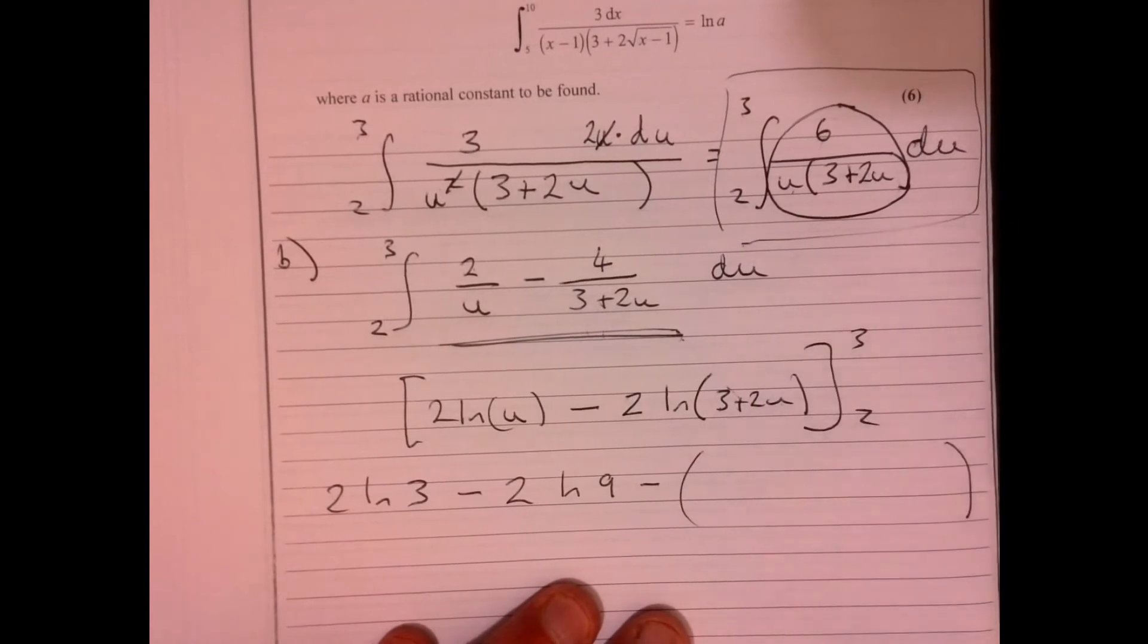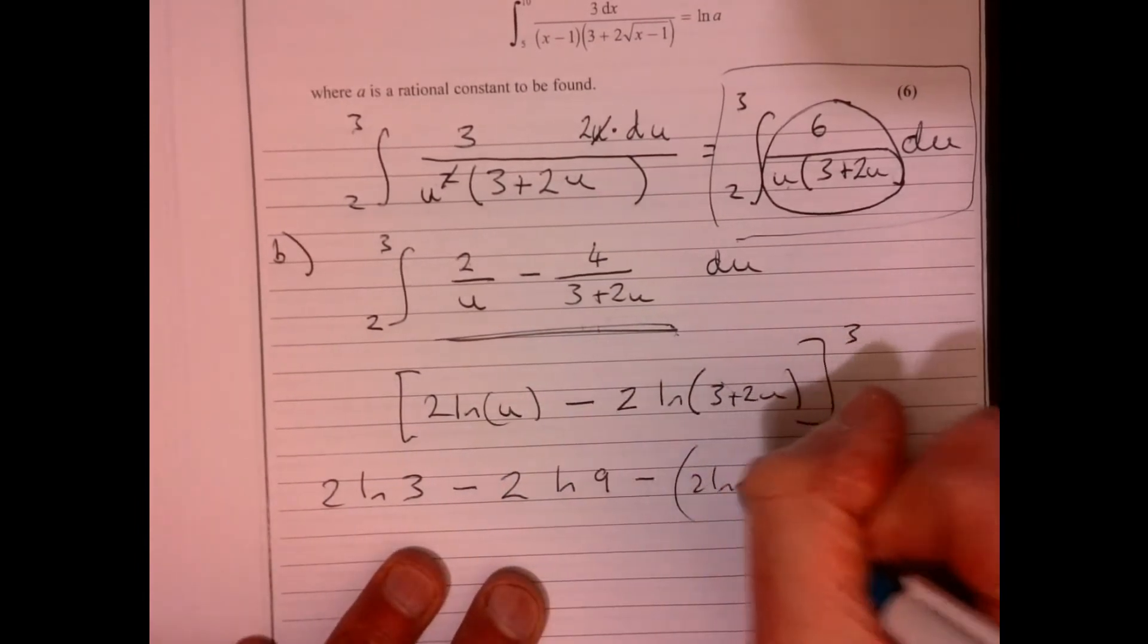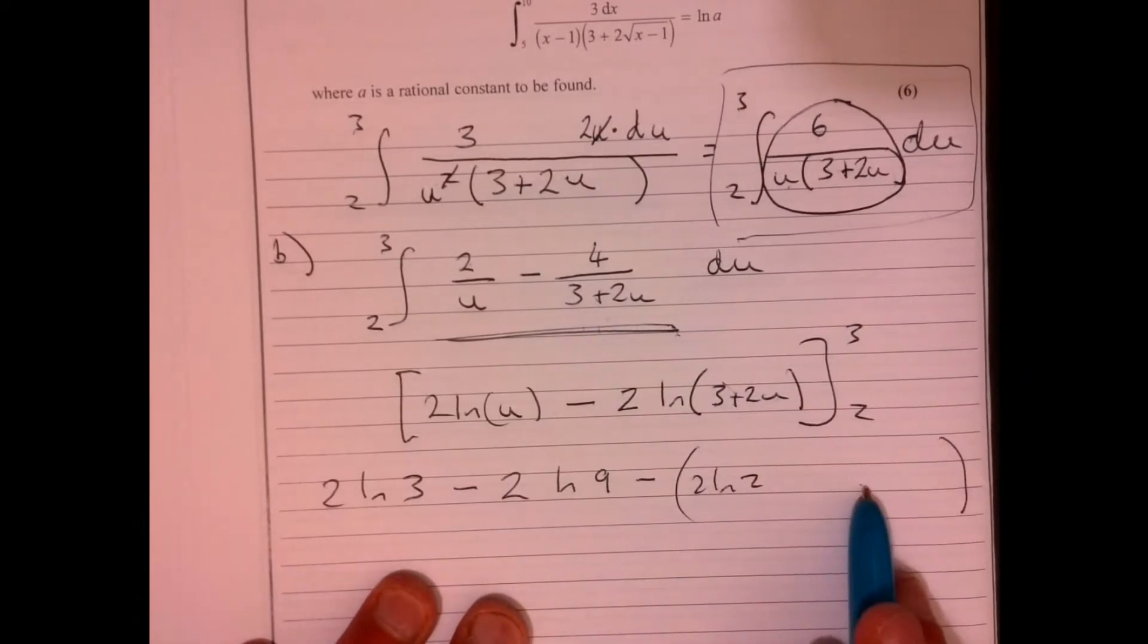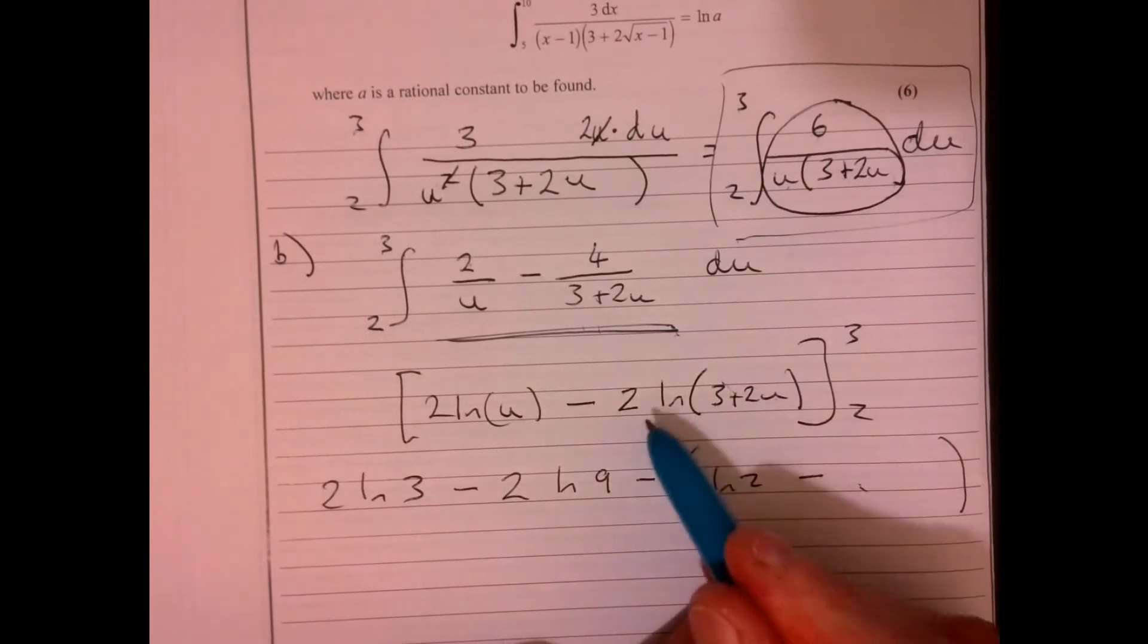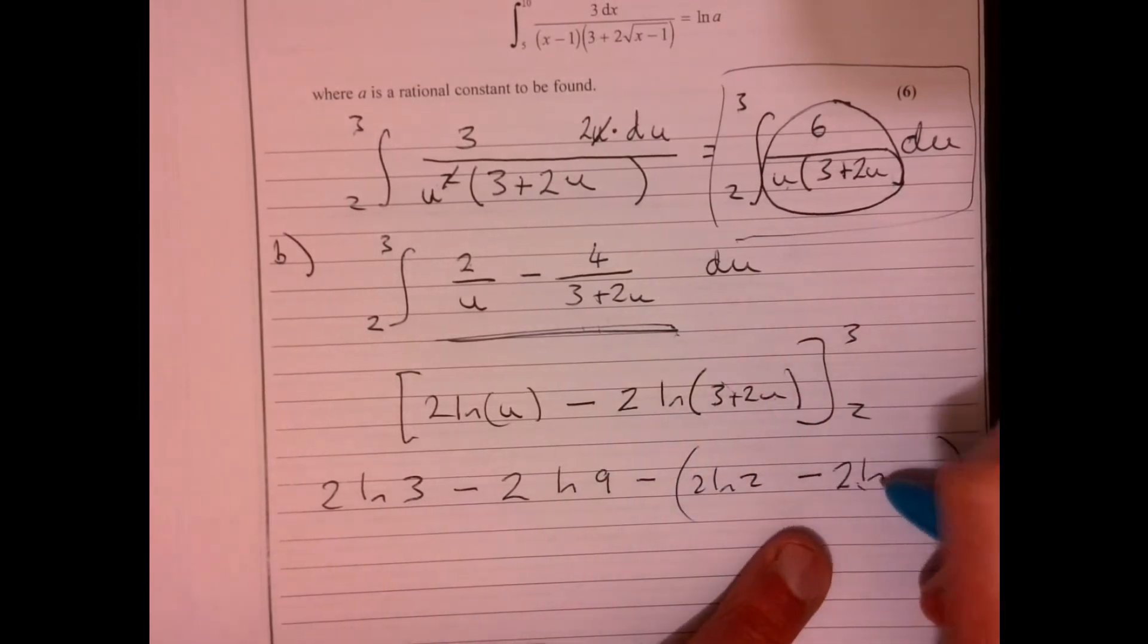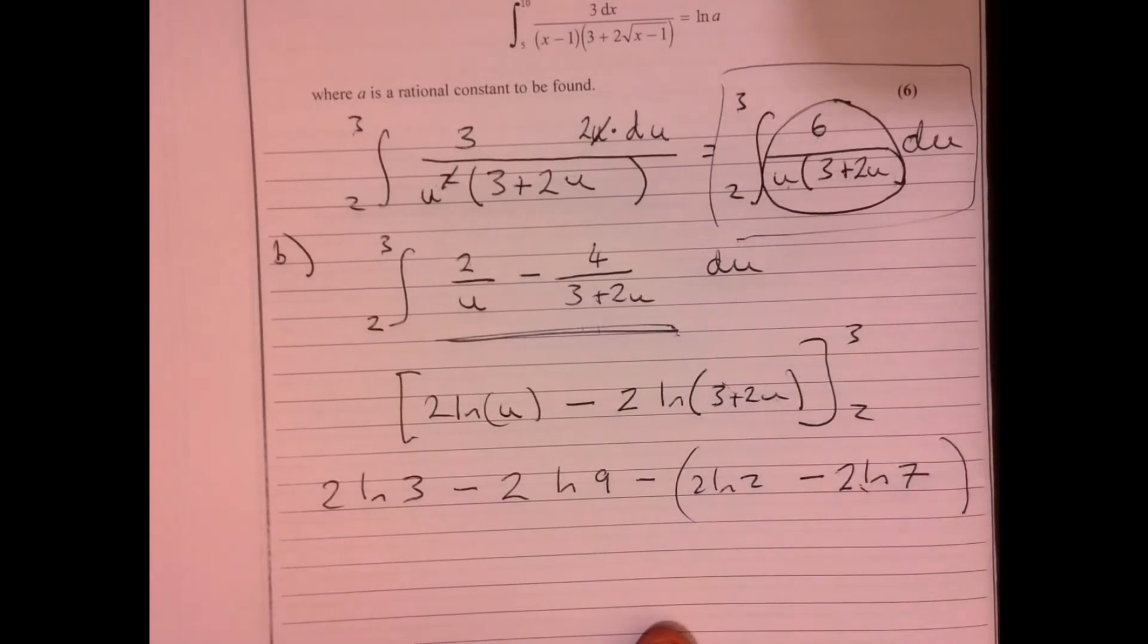And then we're taking away. Now, I always do it like this. Kind of put an extra little step in. So I'm going to put two ln two. Because it's really easy to make a mistake with the sign over here. And then we're taking away this part just here. So two ln.